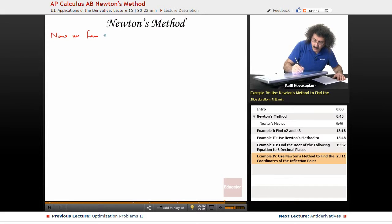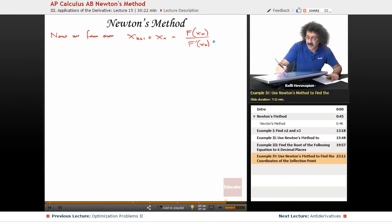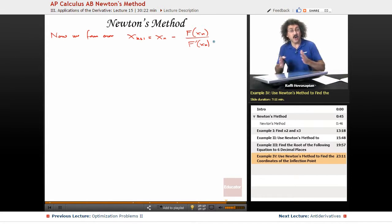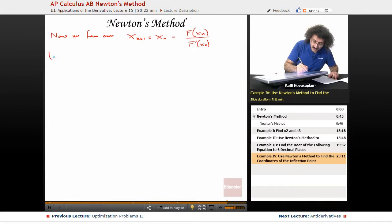Now we form our x to the n plus 1 equals x to the n minus f of x to the n divided by f prime. And of course, I'm hoping that you're doing this by using your calculator tool that gives you a table of data and things like that. Now, looking at a graph, again, we have to choose our x sub 1.